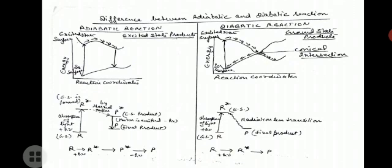This can be understood by the flow chart: reactant molecule R absorbs light (hν) from the ground state to form excited state R*. By thermal motion, R* gets converted into P*, the excited state product. This excited state product then emits a photon, and the final product P in the ground state is formed.